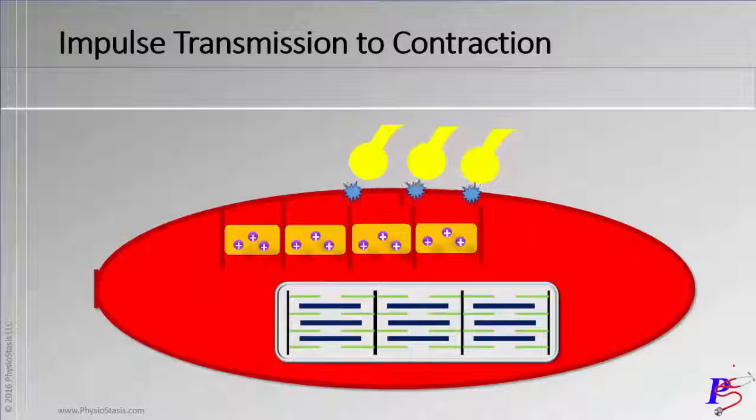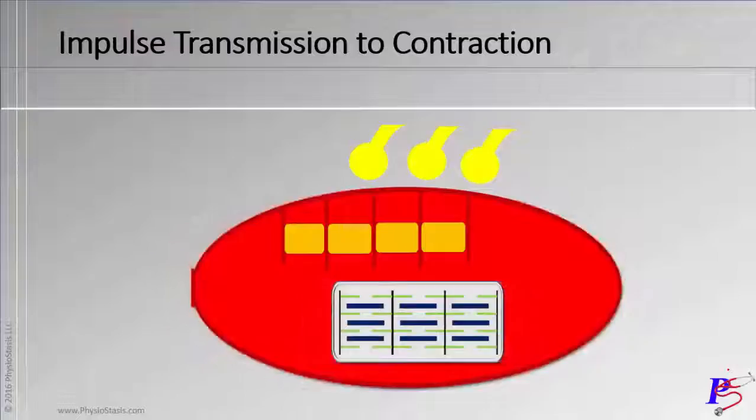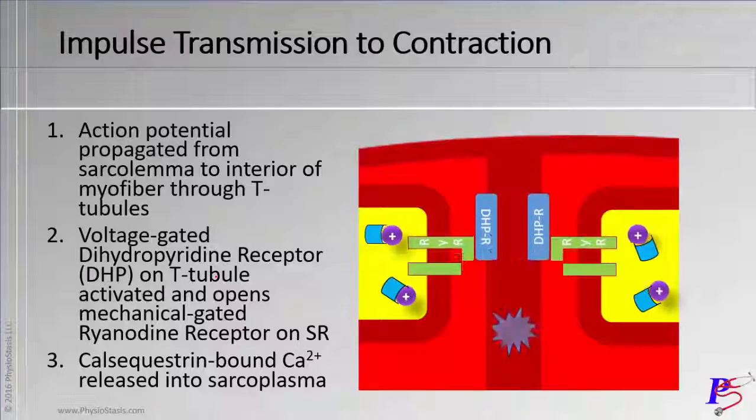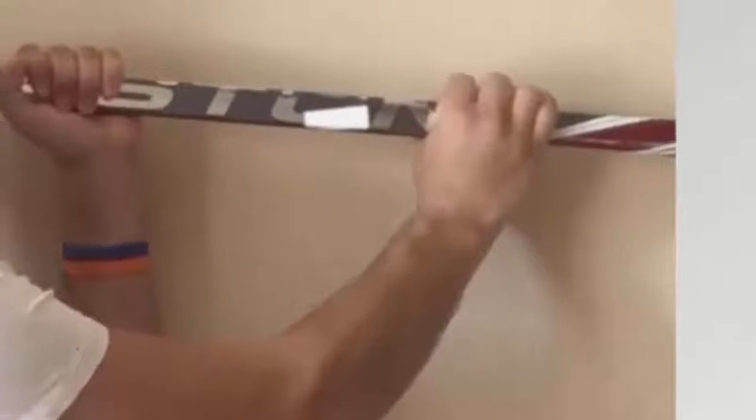But again, the impulse traveling, calcium release from the sarcoplasmic reticulum, getting to the myofibrils in the cytoplasm of the muscle cell, or the sarcoplasm. The final step here is about this.